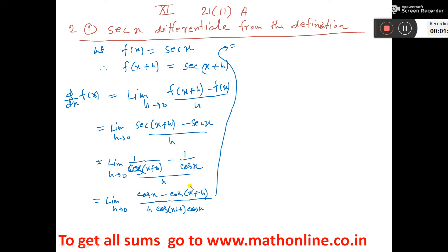Now, we will apply cos C minus cos D formula. See here, cos C minus cos D is 2 sin((C + D)/2), that is (2x + x)/2, that is (x + x)/2. It is sin((D - C)/2), that is (x + x) minus x by 2.